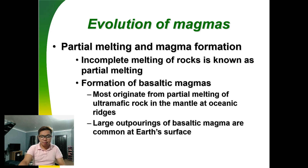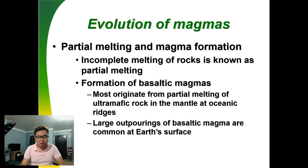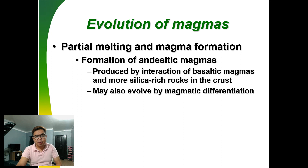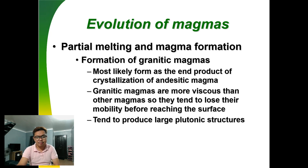Partial melting and magma formation: incomplete melting of rocks is known as partial melting. When basaltic magmas form, partial melting of ultramafic rock occurs. Large outpourings of basaltic magma are common at the Earth's surface. Andesitic magmas are produced by interaction of basaltic magma with more silica-rich rocks in the crust, and may also evolve by magmatic differentiation. Granitic magmas are the end product of crystallization of andesitic magma. Granitic magmas are more viscous than other magmas and tend to lose their mobility before reaching the surface.